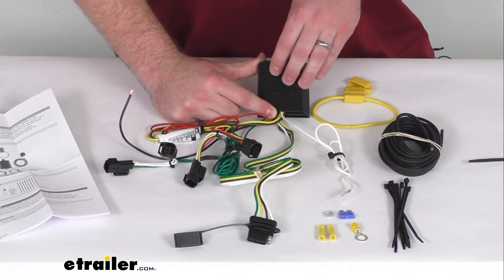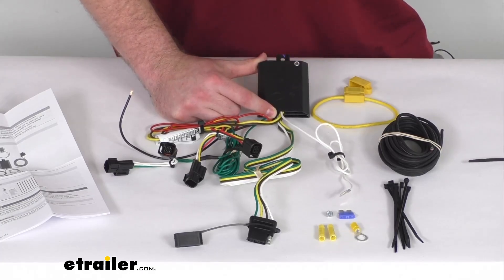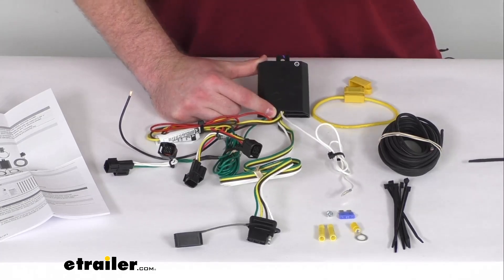This will provide 7.5 amps per circuit for your stop and turn lights as well as 7.5 amps per circuit for your tail lights.